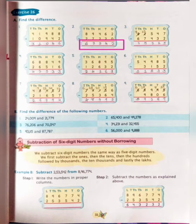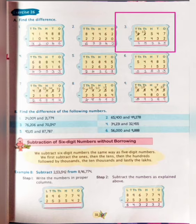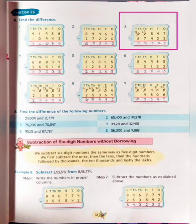Now number 3. First of all, we will count the 1's place: 7 minus 2 is equal to 5. 4 minus 3 is equal to 1. 5 minus 4 is equal to 1. Now the 1000's place: 2 minus 7 is not possible.